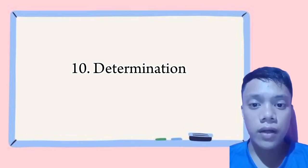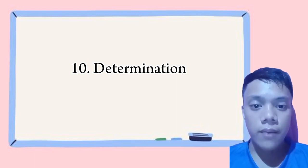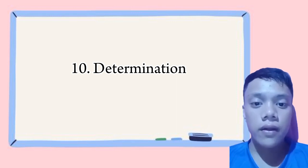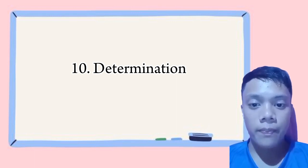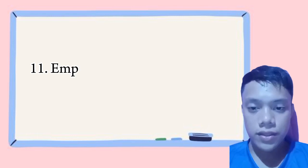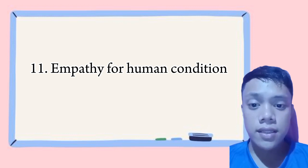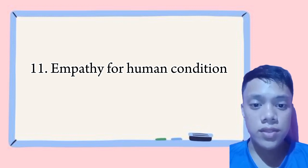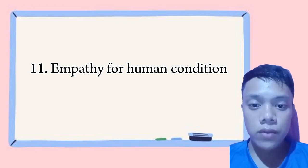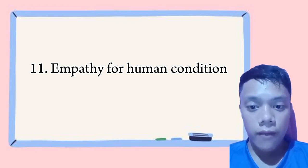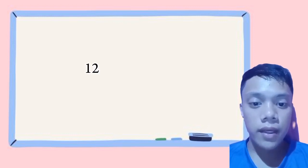Determination — scientists are determined to overcome challenges and find answers to difficult questions. For example, a medical researcher working on developing a new treatment for a disease might persist in their work despite setbacks or failures. Empathy for the human condition — scientists care about the well-being of people and the impact of their work on society. For example, an environmental scientist studying air pollution might be motivated by concern for the health of people living in populated areas.